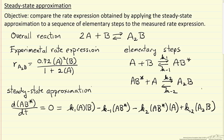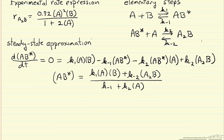We can solve this equation just by rearrangement to get the concentration of AB*, which is not something we can measure, in terms of our measurable concentrations — namely the concentration of A, concentration of B, and concentration of A₂B. This is the concentration of the reactive intermediate that we get from applying the steady state approximation.